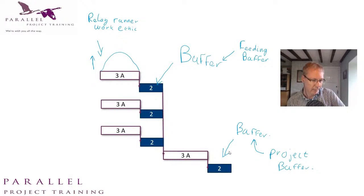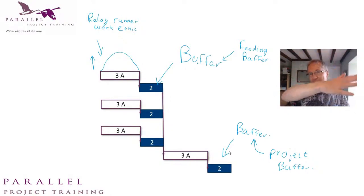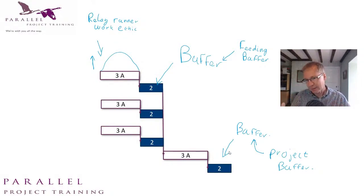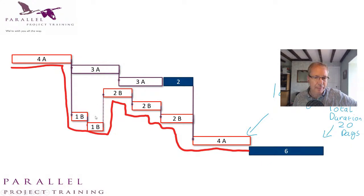There are different types of buffers: feeding buffers come into the critical chain, and then you have a project buffer at the end — so the whole project has a spring at the end. If a project slips late, you've got contingency to absorb the lateness and plan a recovery action. It's almost like setting an internal target date and then having an external target. A planning manager friend called this 'strategic float' — if I've got something finishing at Christmas, I'll aim to have it ready by the first of December as the internal target.